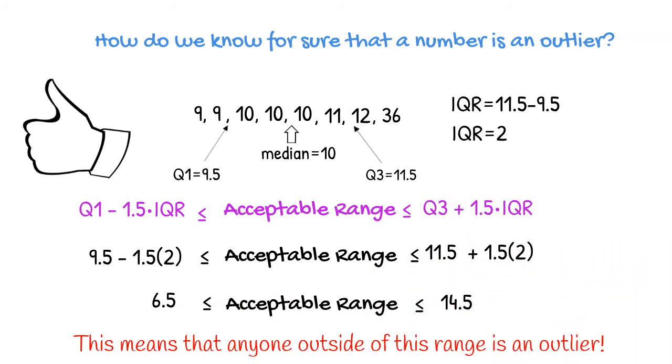Since the teacher is 36 years old, much older than 14.5 years old, she is definitely an outlier. A child less than 6.5 years old would have also been an outlier in this group.